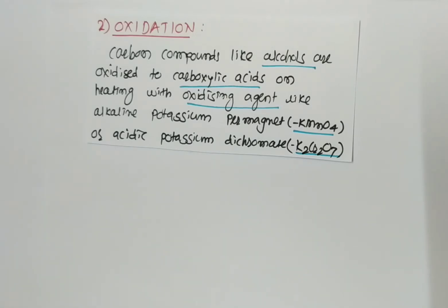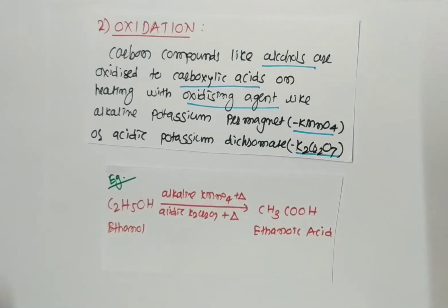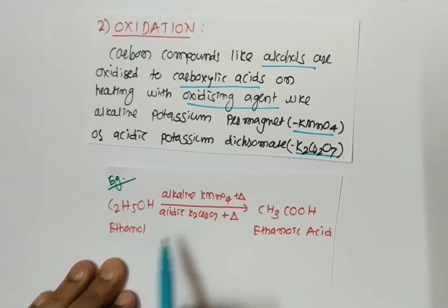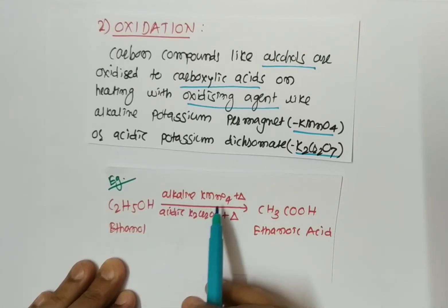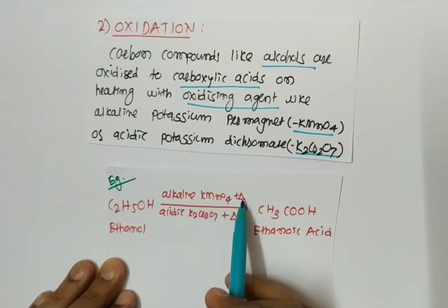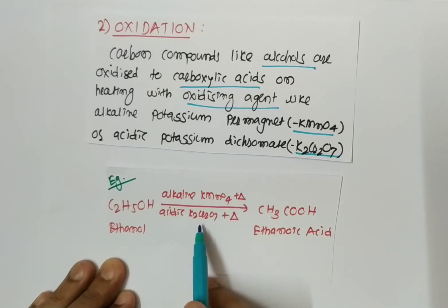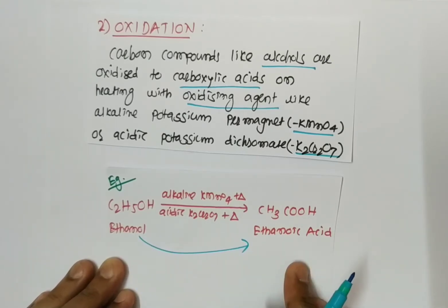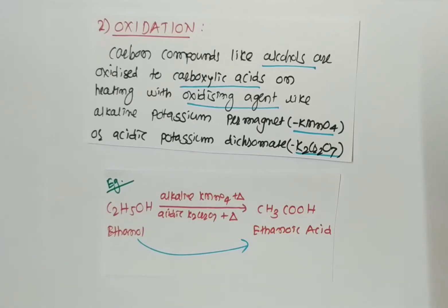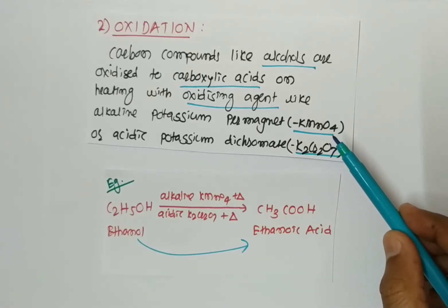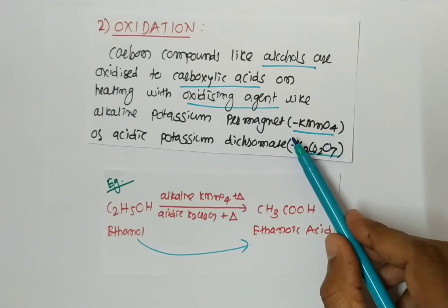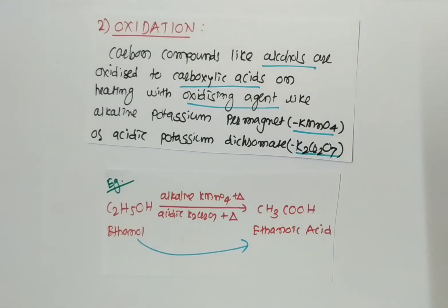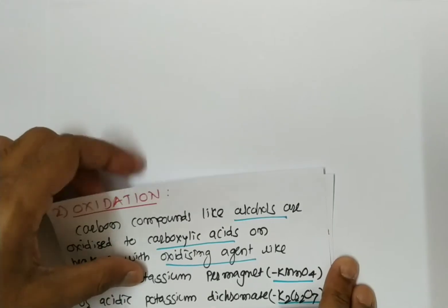See the example: ethanol in the presence of alkaline KMnO4 with heating, or acidic K2Cr2O7 with heating, will form ethanoic acid. So ethanol converts to ethanoic acid. This is the oxidation reaction. The oxidizing agents used are KMnO4 or K2Cr2O7. This is the oxidation reaction of carbon and its compounds.